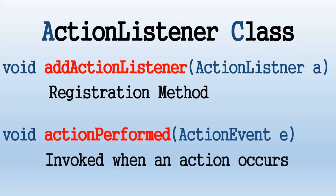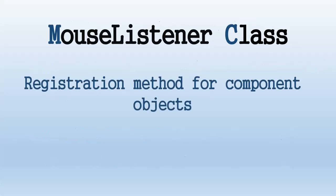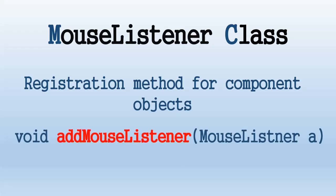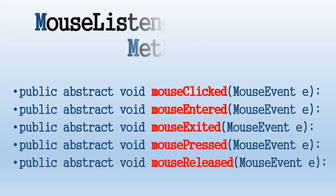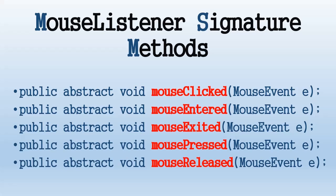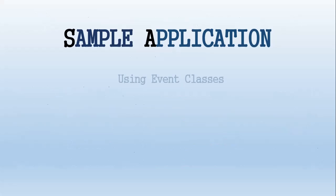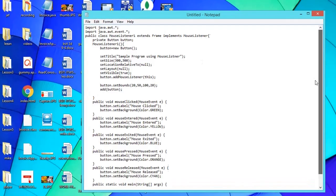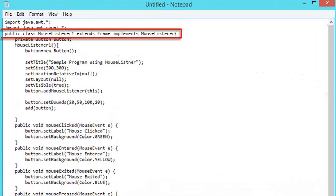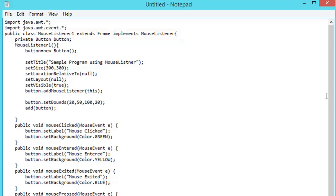MouseListener class: the registration method for the component object is addMouseListener. The MouseListener signature methods are mouseClicked, mouseEntered, mouseExited, mousePressed, and mouseReleased. These abstract methods are required whenever you use the MouseListener interface. The following will be a sample application using the event class MouseEvent and the event listener interface MouseListener. On the text editor window we type the following code.